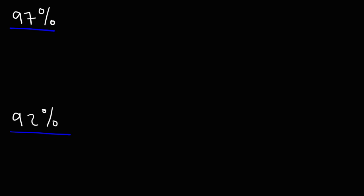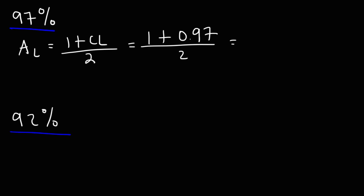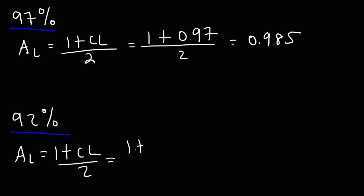Let's calculate the area to the left first using the formula: 1 plus the confidence level divided by 2. For 97%, the confidence level is 0.97, so we have 1.97 divided by 2, which gives us 0.985. Using the same formula for 92%, the confidence level is 0.92, so we have 1.92 divided by 2, which gives us 0.96.